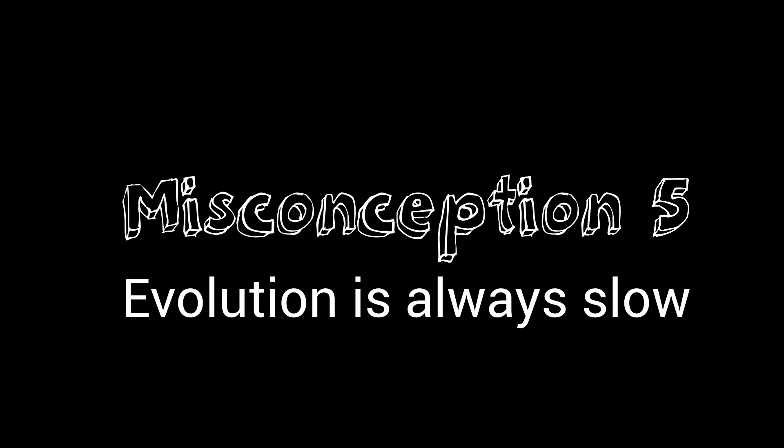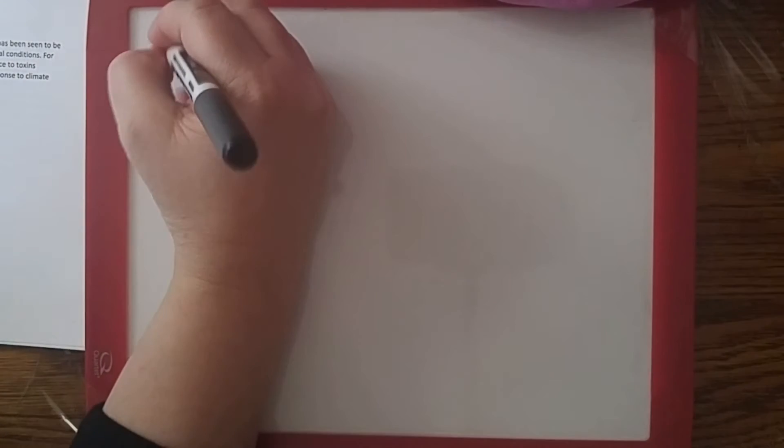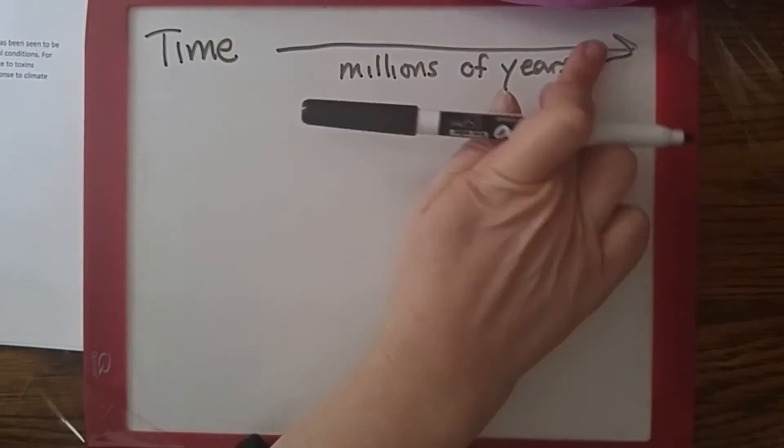Misconception number five, evolution only occurs slowly over millions of years. Evolution occurs slowly and gradually, but it can also occur rapidly.